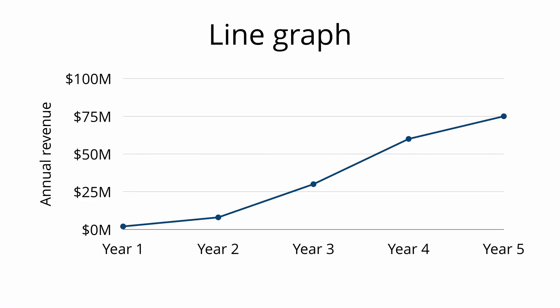The next common graph is a line graph. It simply shows a change in one variable over time. Time is almost always on the x-axis for line graphs. The y-axis here shows annual revenue. Therefore, this line graph shows how annual revenue has changed from year one to year five.